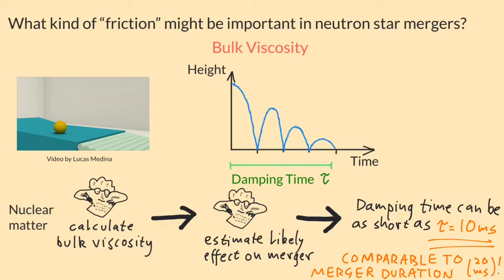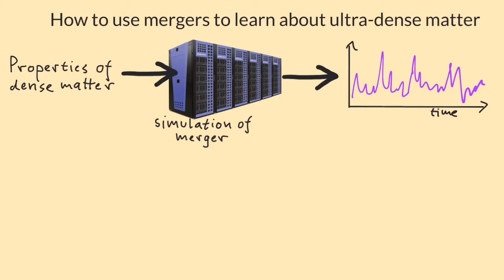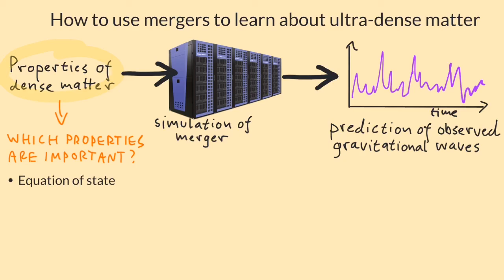So why is this important? Well, it shows us how we could use mergers to learn about ultra-dense matter. Remember, the way we use mergers as a natural experiment is that we calculate the properties of whatever form of dense matter we think might be created, simulate how a merger would go with that kind of matter, and predict what observers would see. So we've learned something about which properties are important for doing accurate simulations of neutron star mergers. As well as the equation of state, we need to know the bulk viscosity.